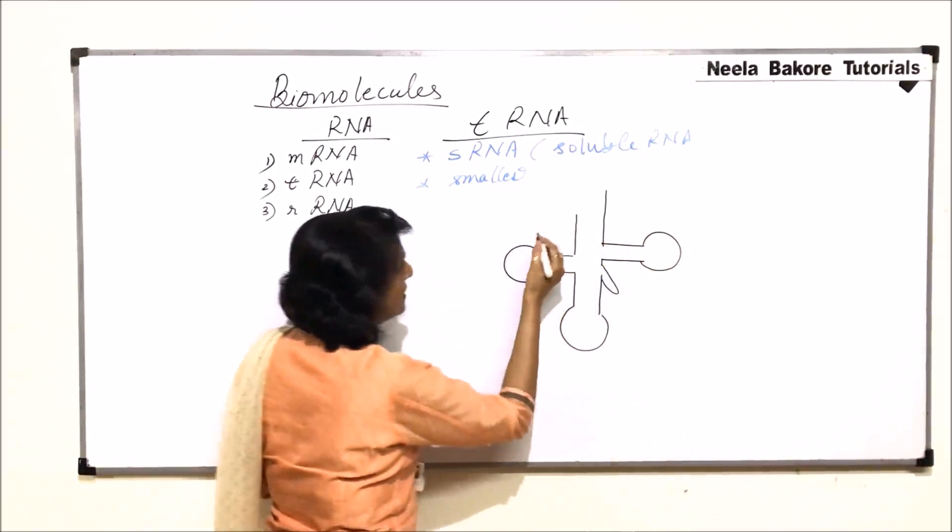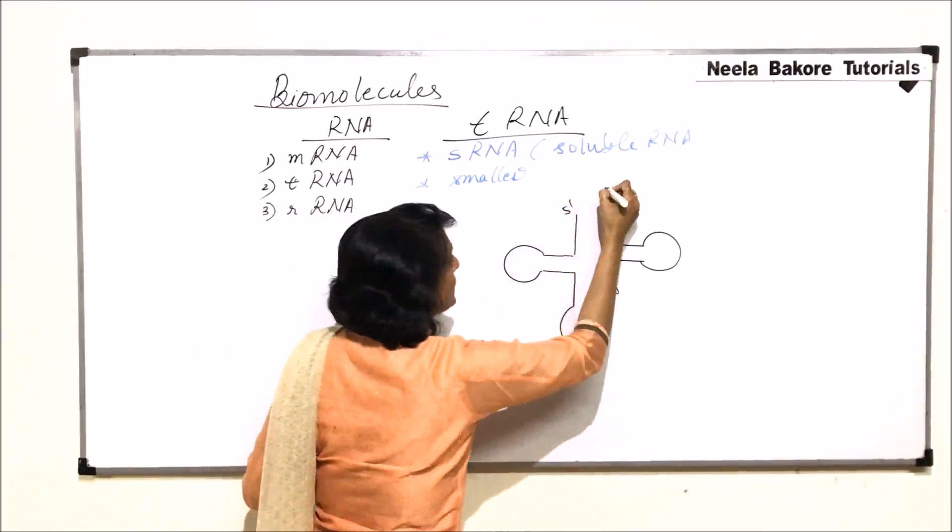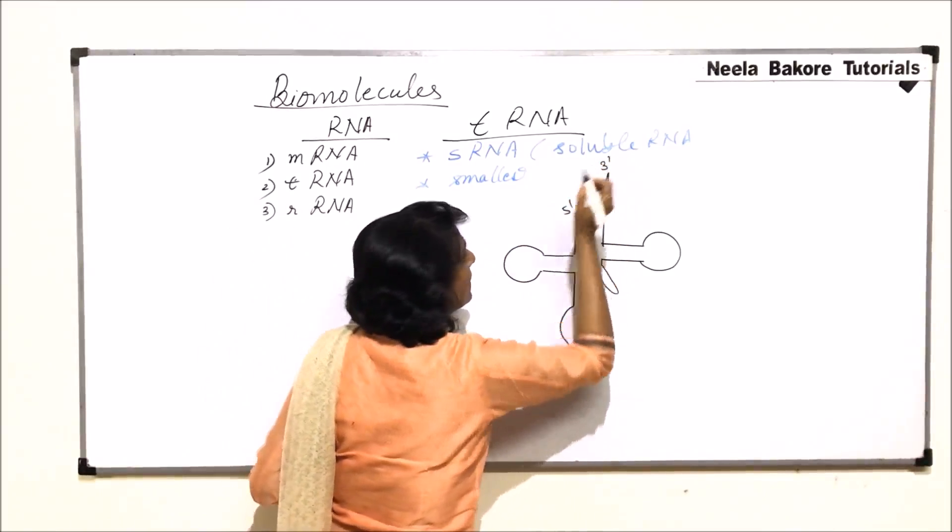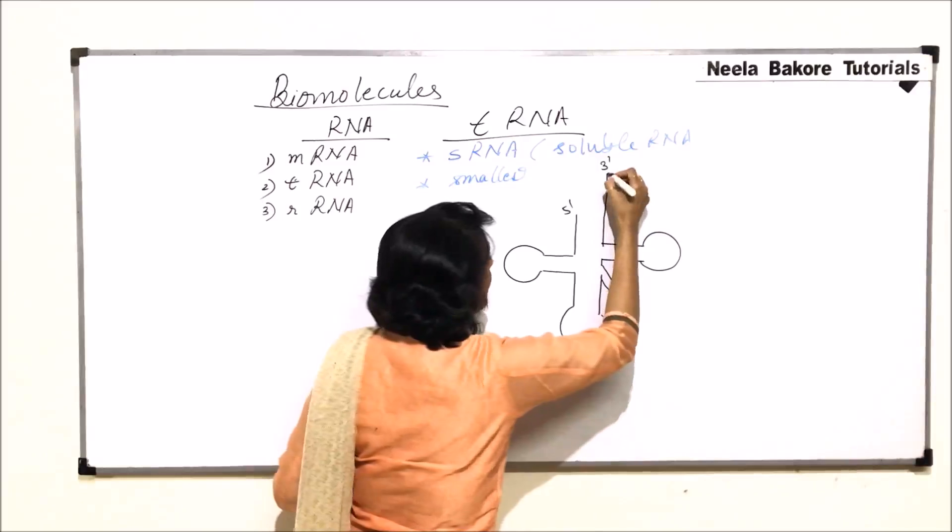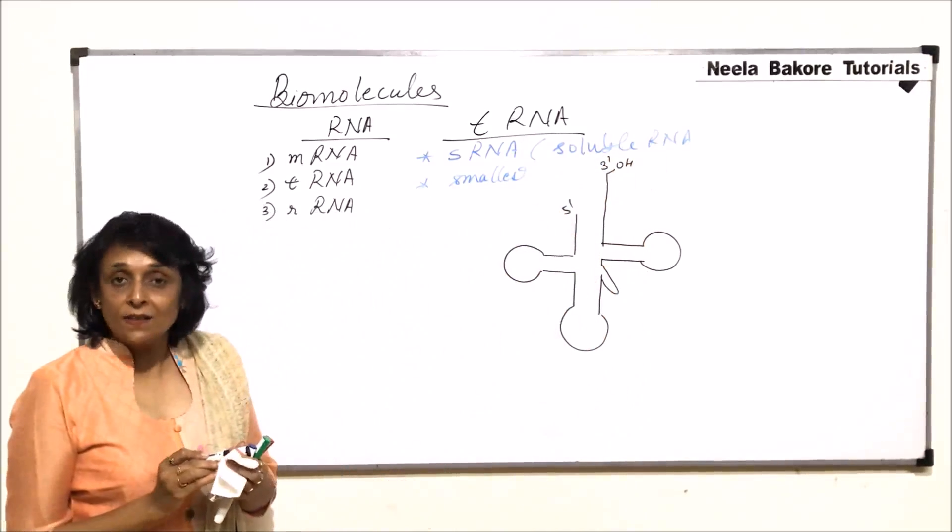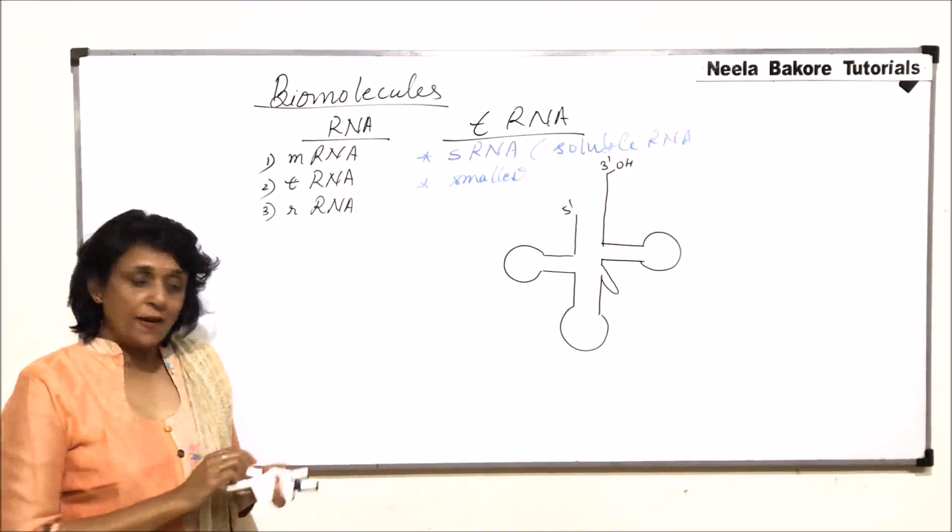So now let us label these parts. This is the fifth prime and this is which is an overhang. This is the third end or third prime. Third prime has OH free.